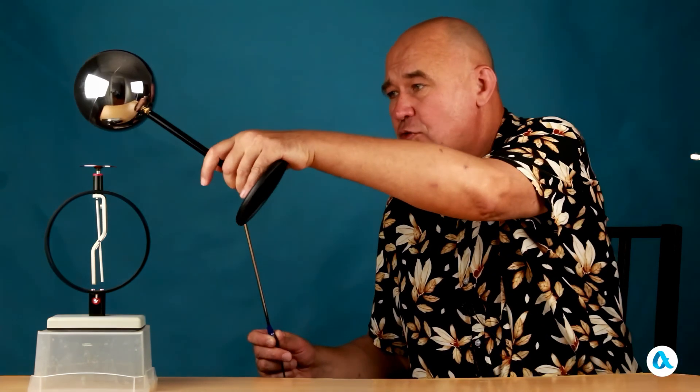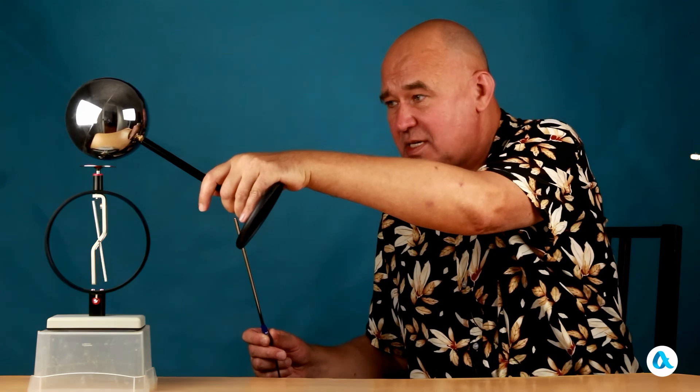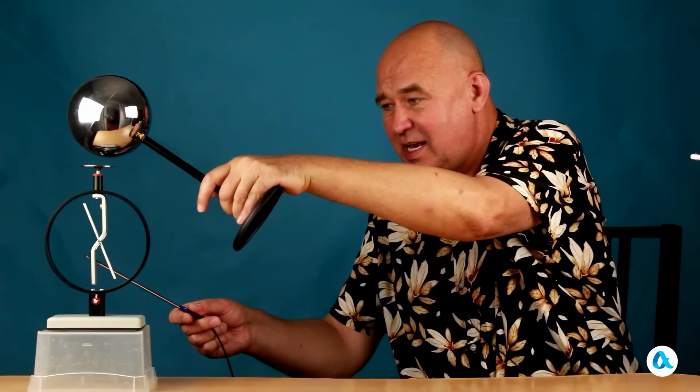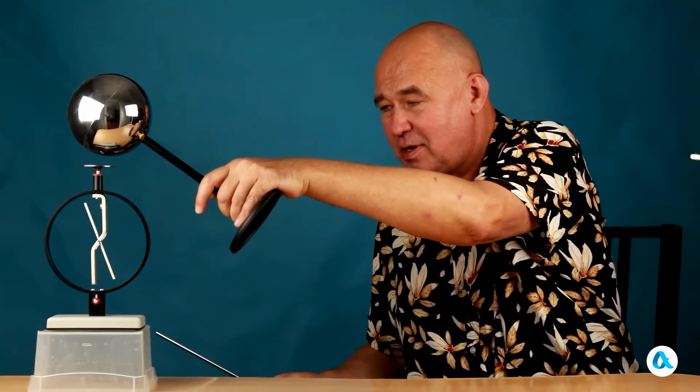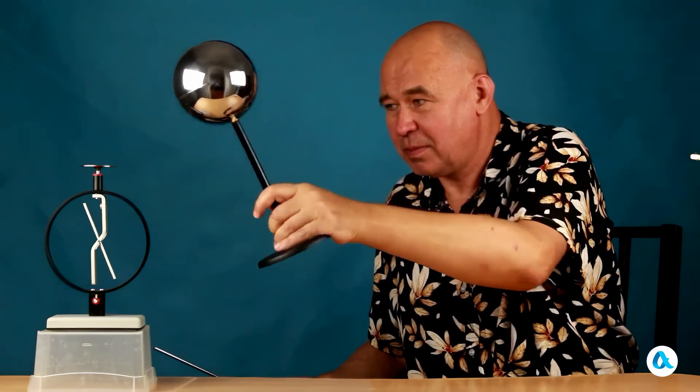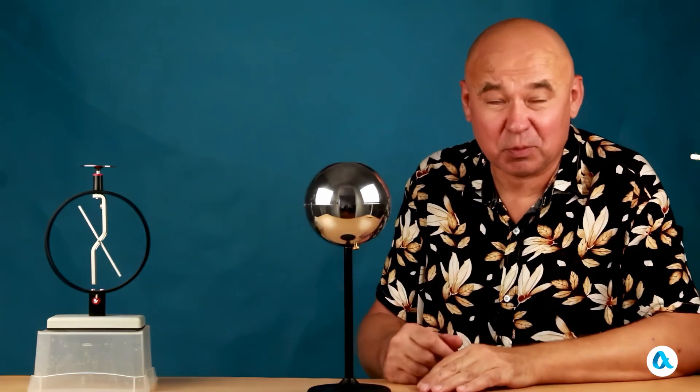I take the ball again, bring it close to the disc without touching it. The needle deflects, and now I ground the clamp. I remove the ball, and the needle deflects even more. Why did this happen?